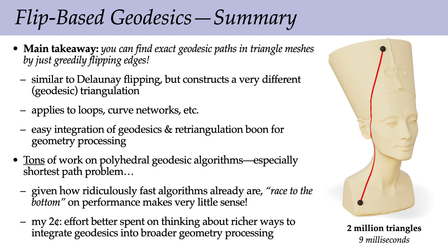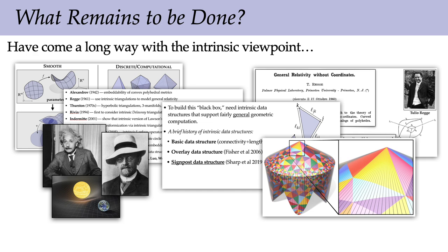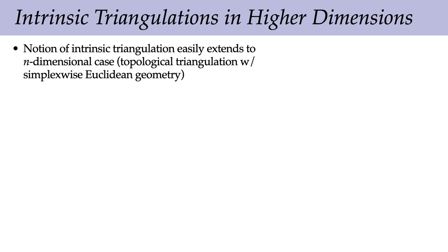Over the years there's been tons of work on algorithms for exact polyhedral geodesics, especially the single source shortest path problem. But given how ridiculously fast algorithms already are — on meshes with millions of triangles, results in about a hundredth of a second — the race to the bottom on performance really doesn't make sense anymore. Effort in this area is better spent thinking about richer ways to integrate this technology for computing geodesics into the broader geometry processing pipeline. This intrinsic viewpoint has been building for many years, starting in the smooth setting and gradually getting into discrete and computational algorithms. My feeling is that we've really just barely scratched the surface.